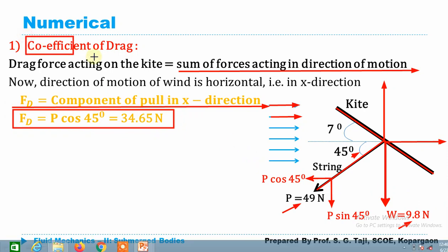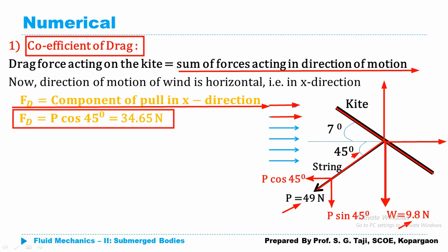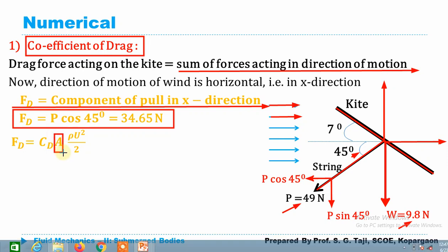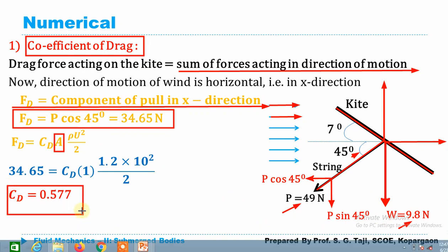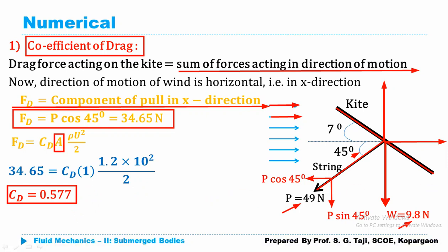FD = P·cos45 = 34.65 N. Now, using the drag force equation FD = CD × A × ρU²/2, with all known values — area = 1 m², density = 1.2 kg/m³, velocity = 10 m/s — the drag coefficient CD comes out as 0.577, which is dimensionless.